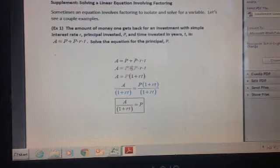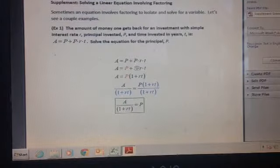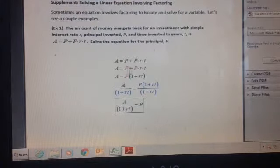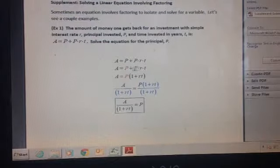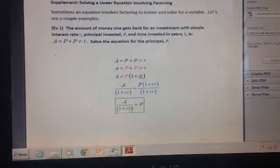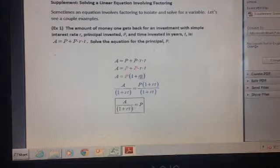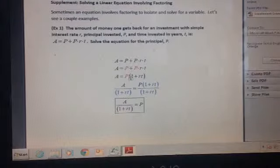I'm going to factor it out here and here. When I factor out of the first term, I just have one left. When I factor it out of this term, the only things left are r and t. So I have this factored form: P out in front—that's what I want to get by itself—times (1 + rt). That's my second factor.